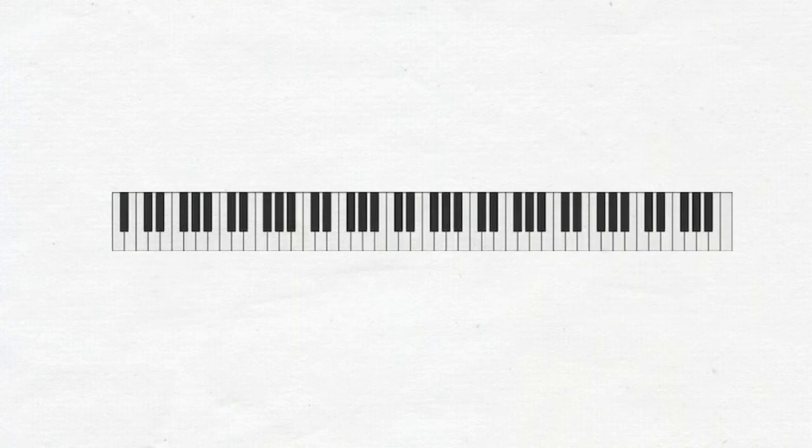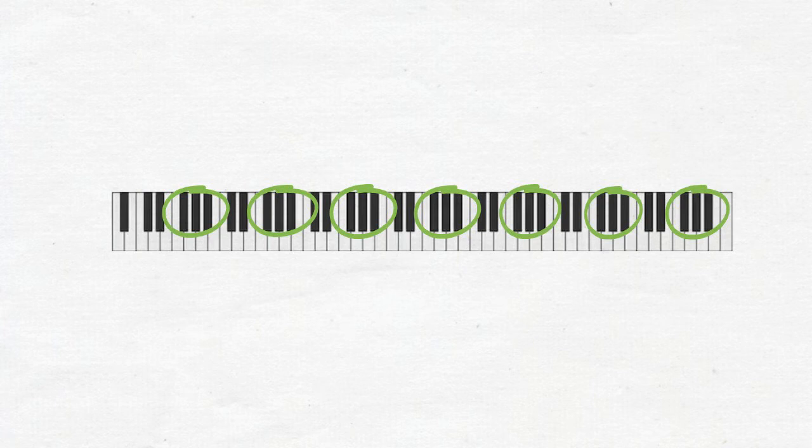Looking at a piano, you may have noticed that the black notes are always in groups of twos and threes. Well, except for this poor note all by himself all the way to the left.